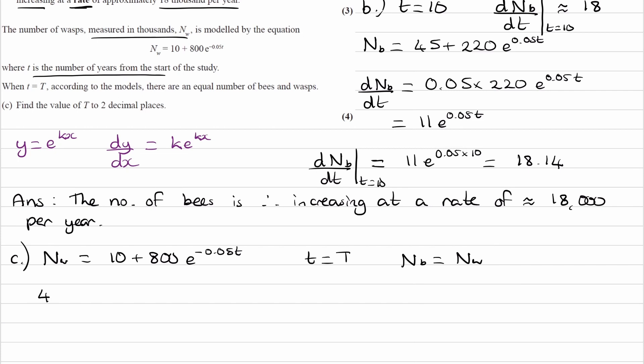So nb is 45 plus 220 e to the 0.05T. And then nw is 10 plus 800 e to the minus 0.05T. And I'll bring everything to the left-hand side.